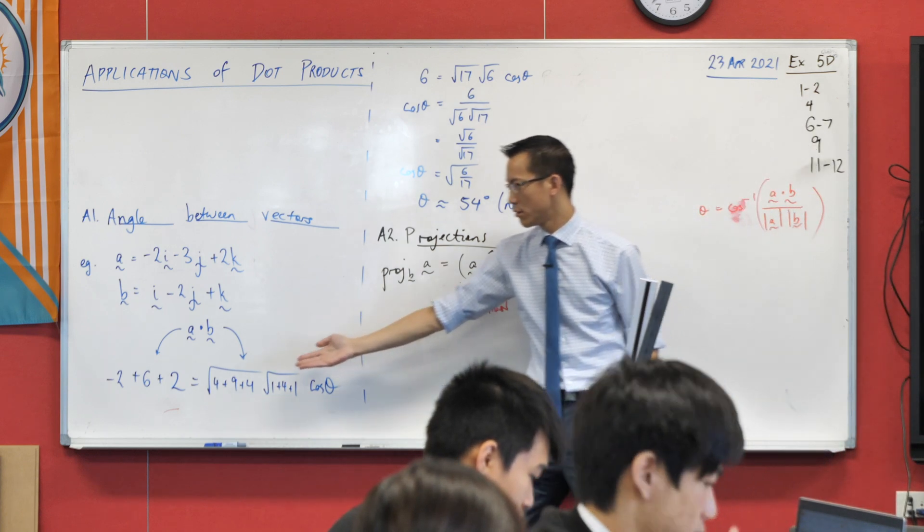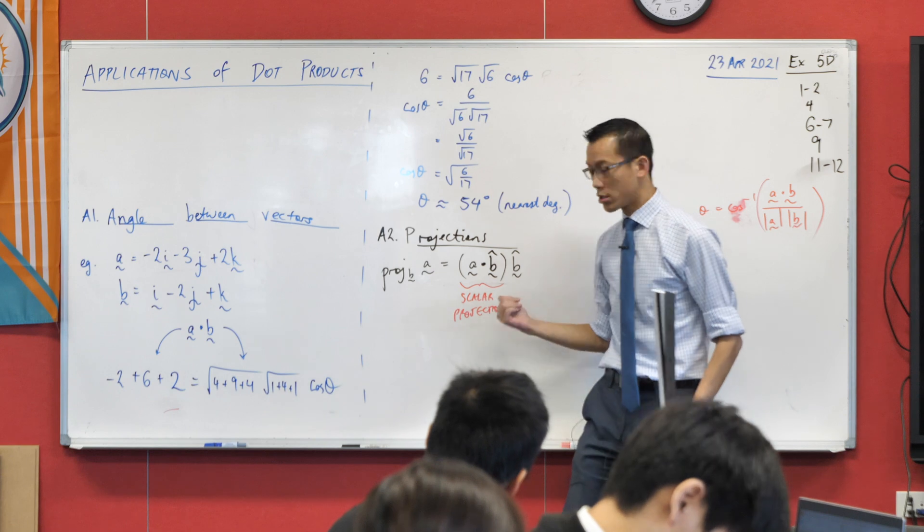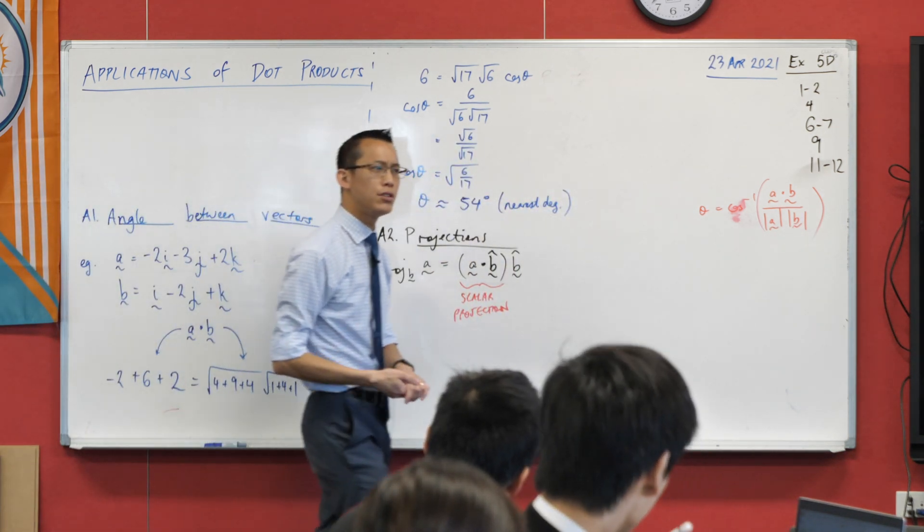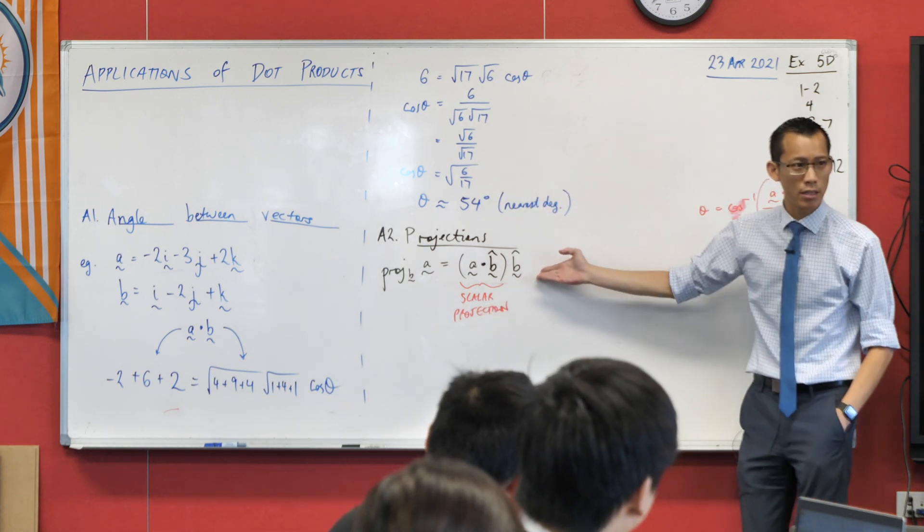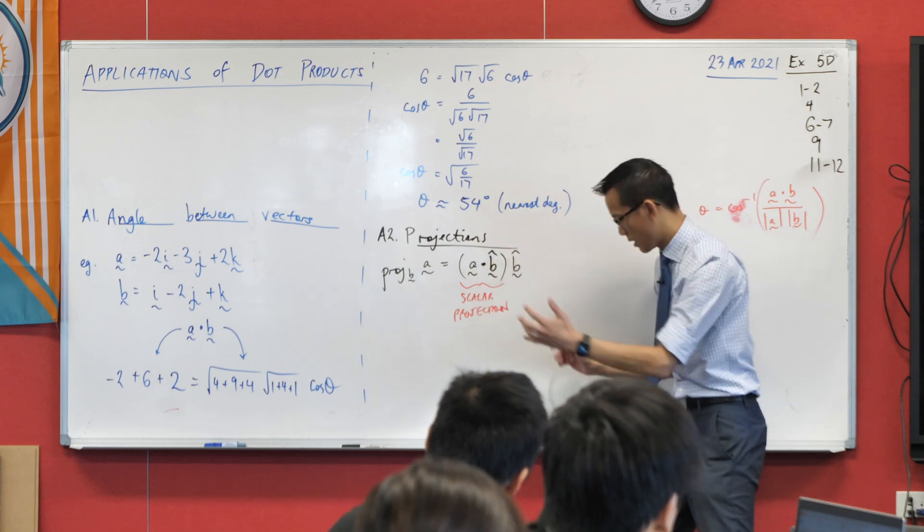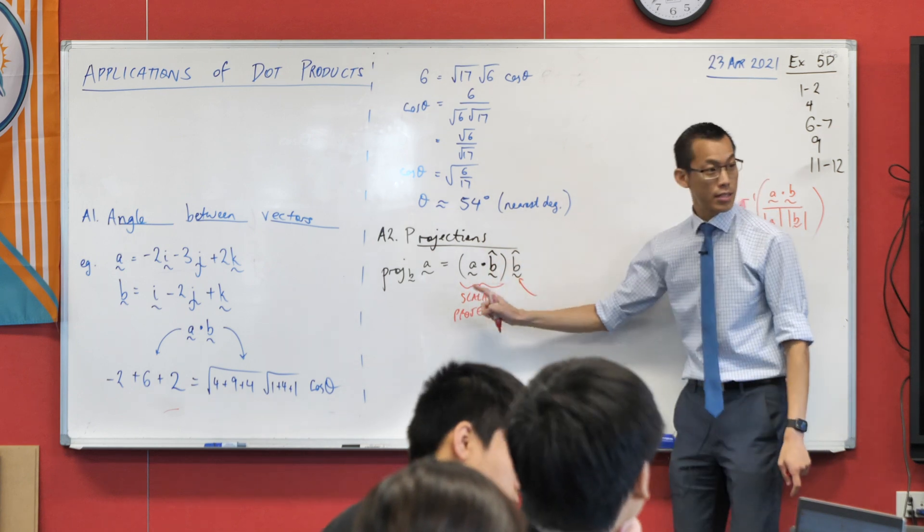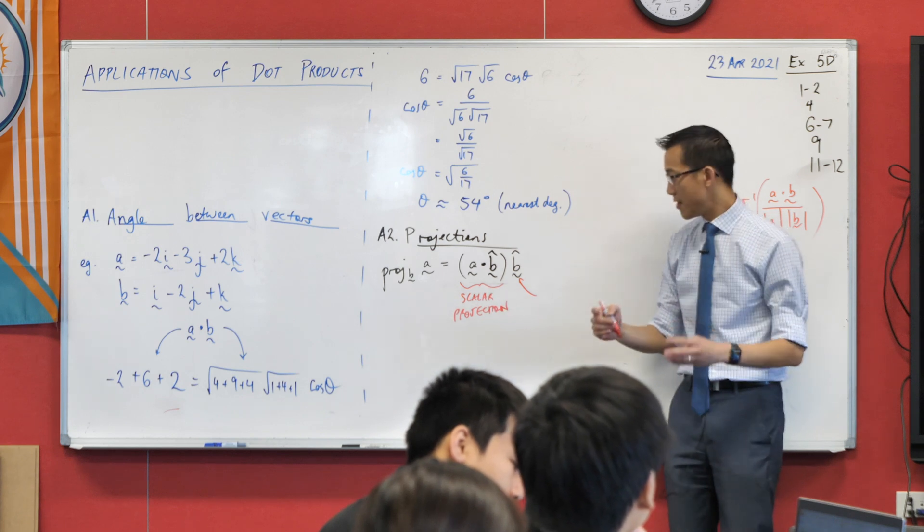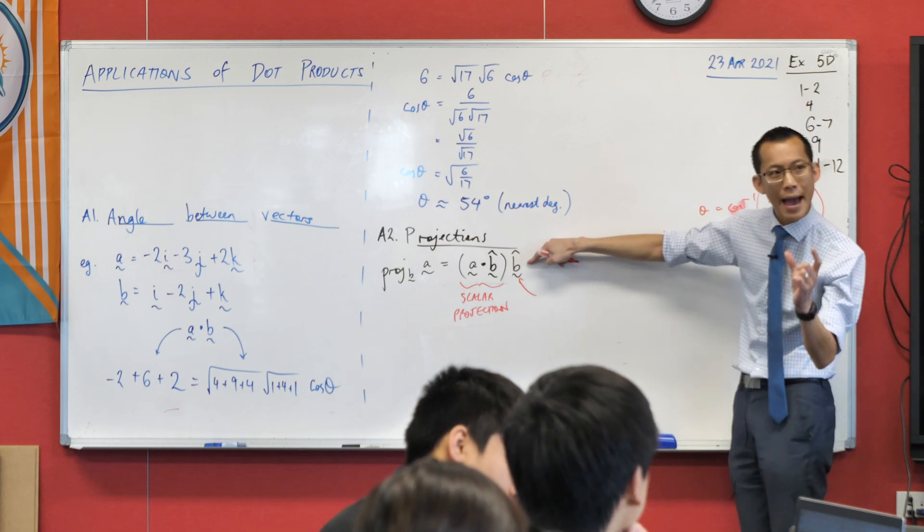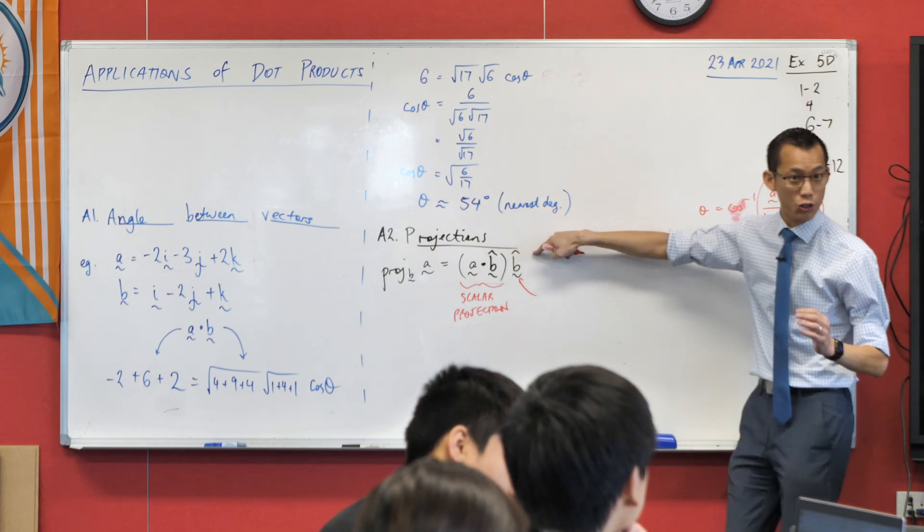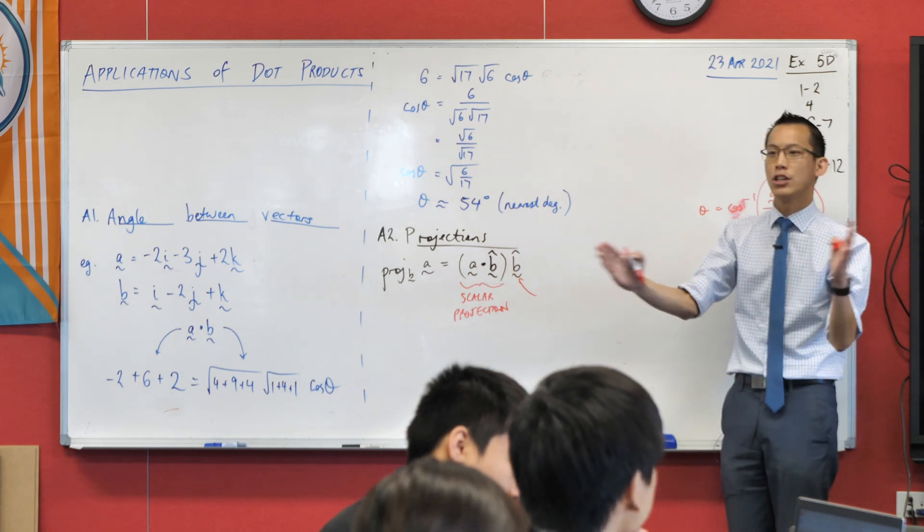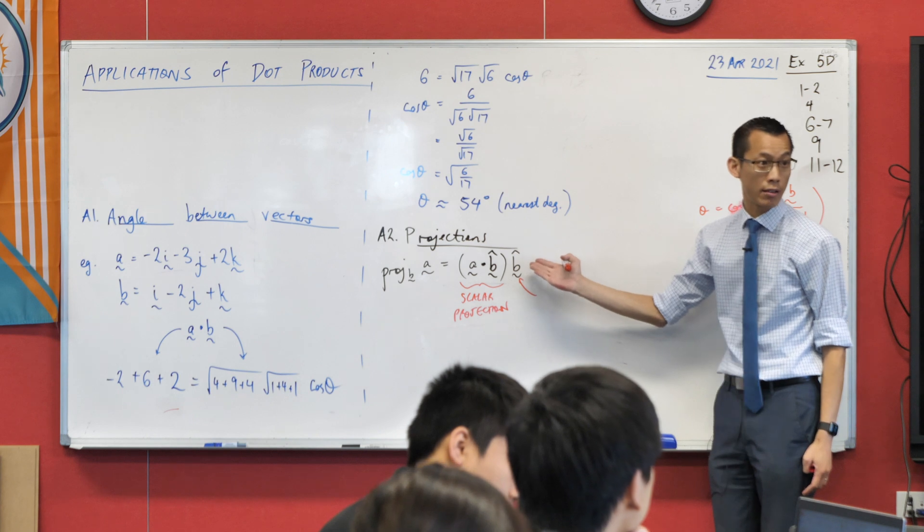When you do something dot something, you just get a number out. So there's the scalar projection out the front, and then what effect does it produce when we multiply by B hat at the end? It makes you a vector projection. It gives me the vector projection, that's the whole thing, and the way it does that is you get this number, which is a length, and then you apply that length, or that magnitude is maybe a better way to say it, apply that magnitude in the direction of wherever B is going.